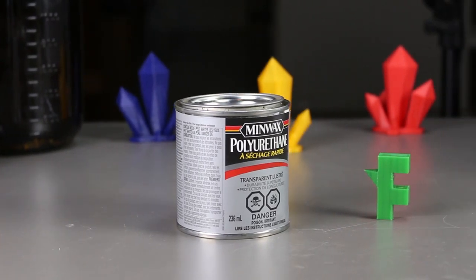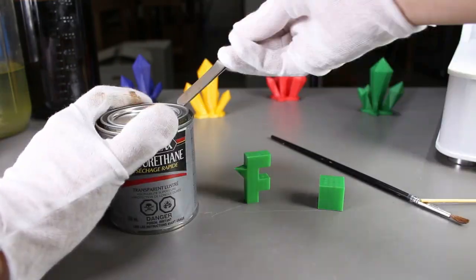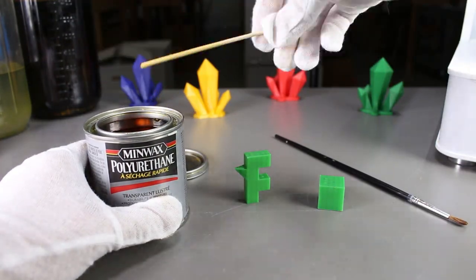Let's apply the third layer on our print which already has two coats. Afterwards, let's do a coat on this cube and then once it's dry, we'll sand it down.